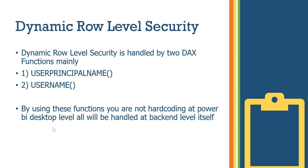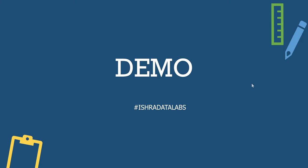This is very important, guys. There are DAX functions used in Dynamic RLS — the DAX functions USERNAME and USERPRINCIPALNAME. These are very important. The key point is that by using these functions you are not hard-coding anything at the Power BI Desktop level; everything is handled at the back-end level itself.